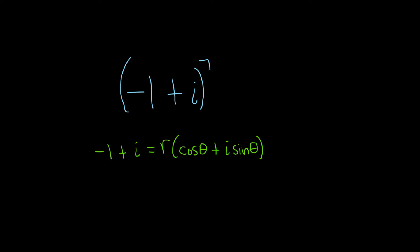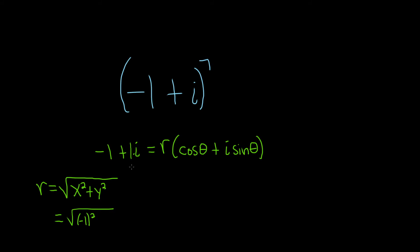There's a formula for r. So r is equal to the square root of x squared plus y squared. In this problem x is negative one, so it'll be negative one squared. And the y is one — there's a one in front of the i, that's our y — so plus one squared. So using matching, x is negative one and y is one. This is equal to the square root of one plus one, which is the square root of two.